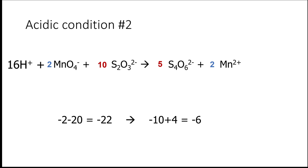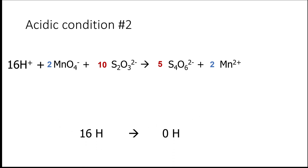Balance the charges by adding hydrogen ions. We need 16 hydrogen ions on the left-hand side so that 16 − 22 equals −6. Lastly, balance the hydrogen by adding water molecules. On the left-hand side we now have 16 hydrogen, and on the right-hand side we need 16 hydrogen, so we add 8 water molecules.